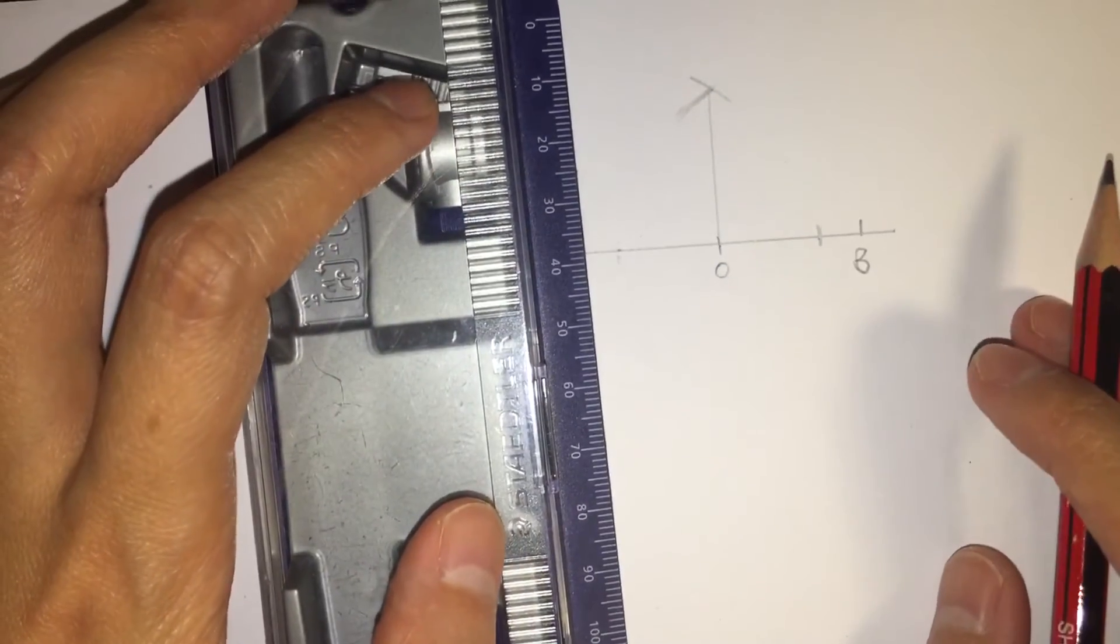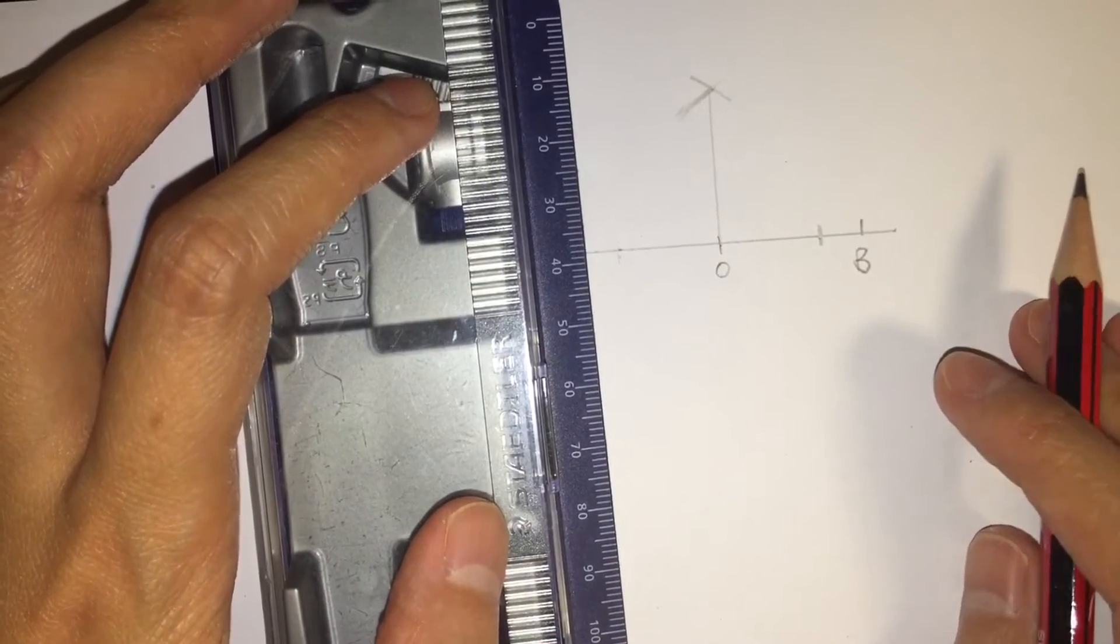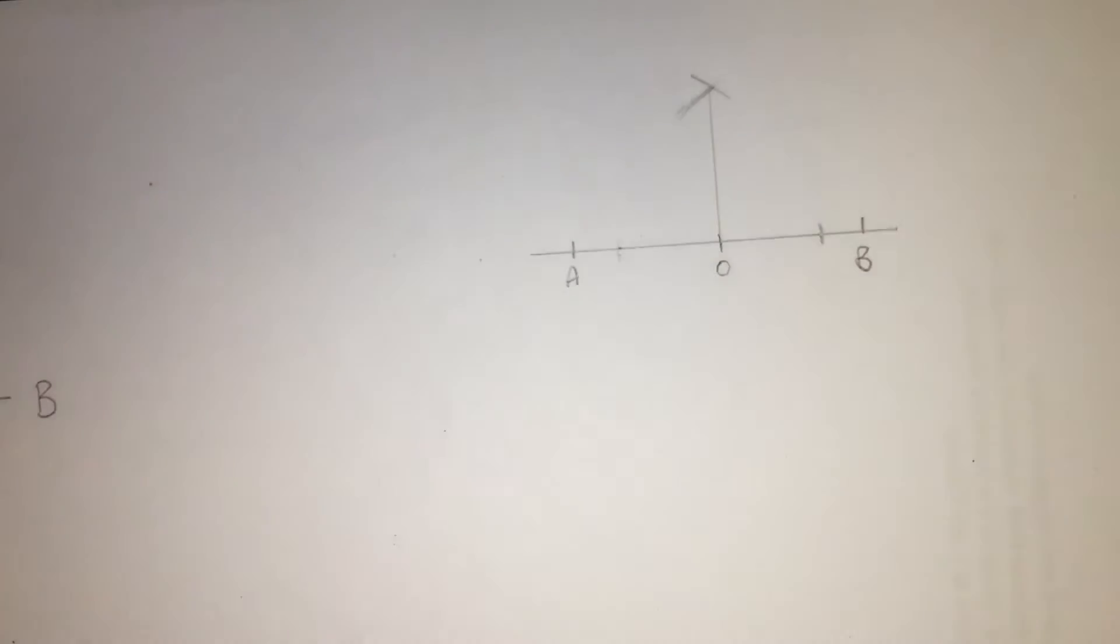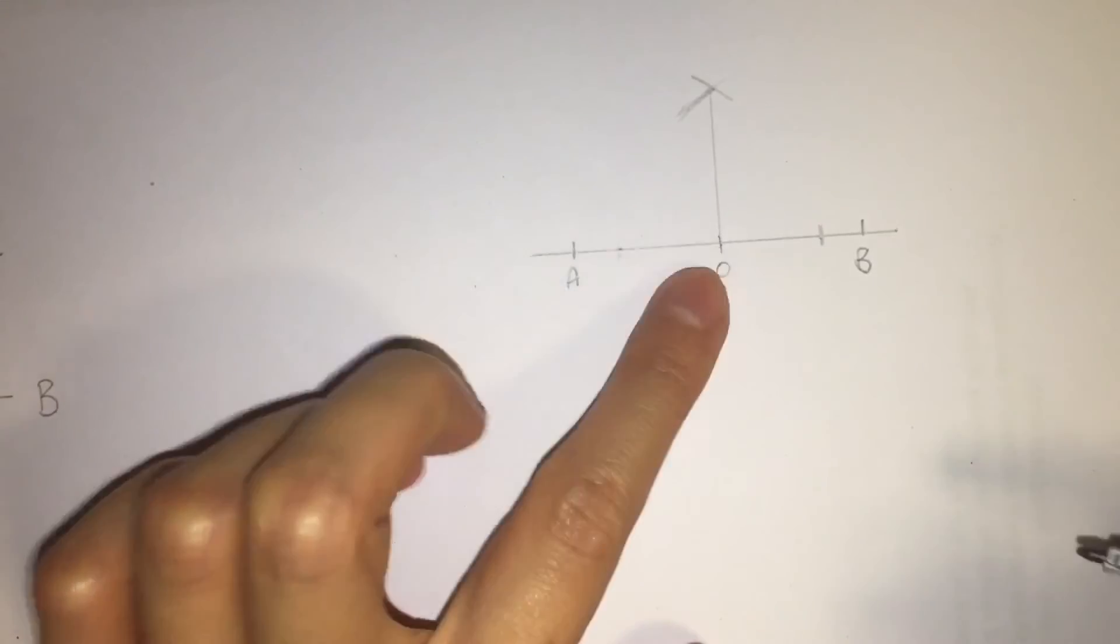This is how we get the 90 degree angle. And if we want to get a 45 degree angle from this point,